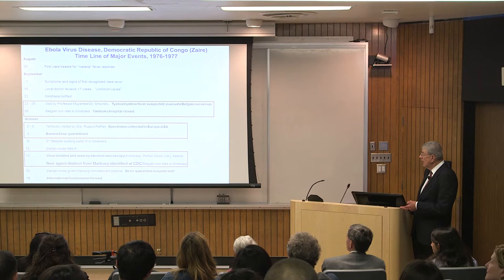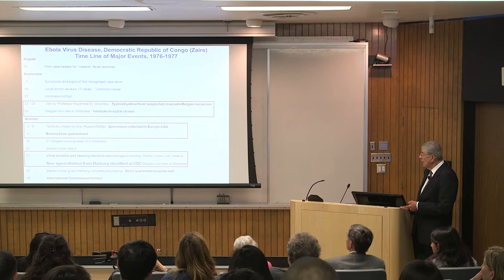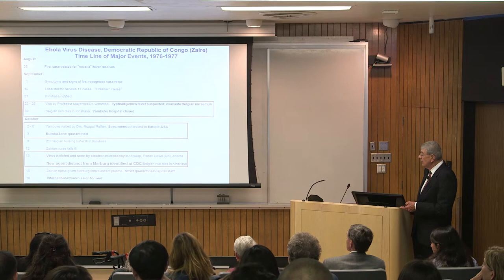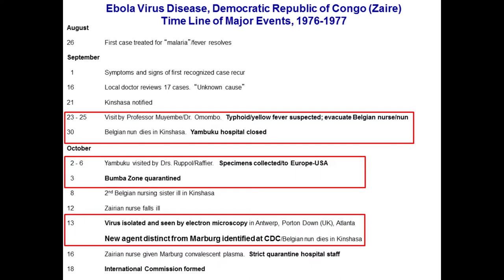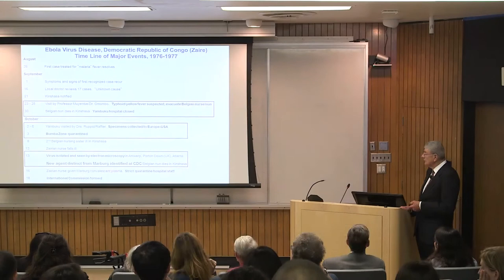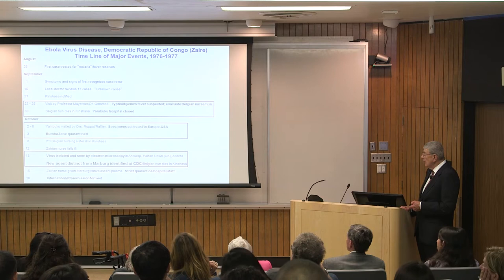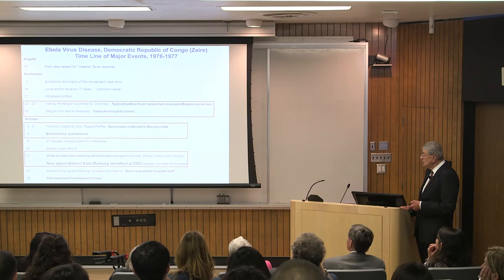Just before we left — around the 15th for Kinshasa — a new agent was identified at the CDC. We got on the airplane the same day they made the identification. A clinician from South Africa who had dealt with a two-person Marburg outbreak in 1975 came to Kinshasa with Marburg convalescent plasma, which was given to this patient and to the Zairean nurse — and she died.